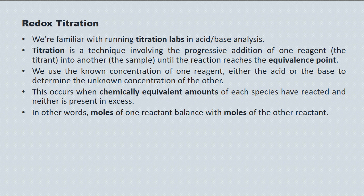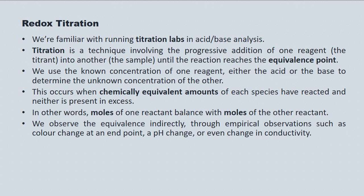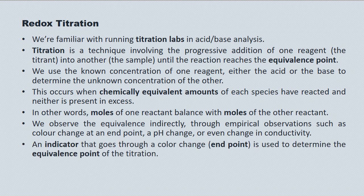In other words, moles of one reactant balance with moles of the other reactant, according to their stoichiometry. We observe equivalence indirectly through some empirical observation, such as a colour change at an end point, a pH change, or even a change in conductivity. An indicator is a class of chemicals that goes through a colour change — an end point — and it's used to determine the equivalence point. The end point approximates the equivalence point, so when you reach the end point, you know you're at equivalence.